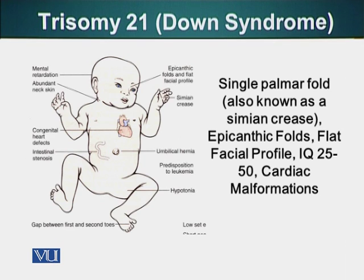The simian crease is visible in the hand. These patients also have epicanthal folds — eyes resembling those of oriental or Chinese-origin people. They also have a flat facial profile. The IQ of these patients is between 25 and 50. Additionally, the majority of these patients have cardiac malformations. Next, I would like to show you a photograph of a patient with Down syndrome.